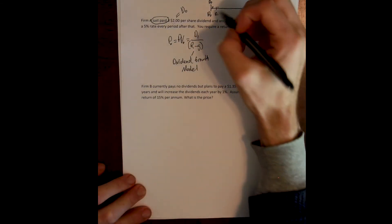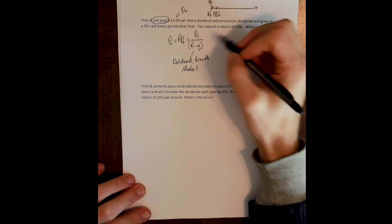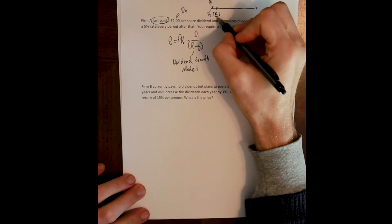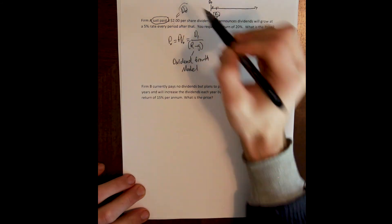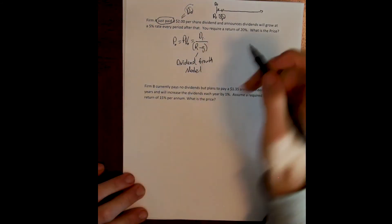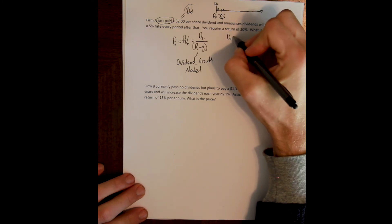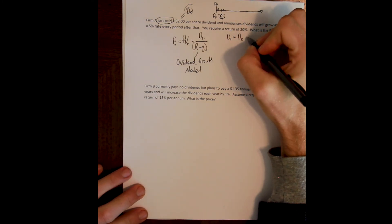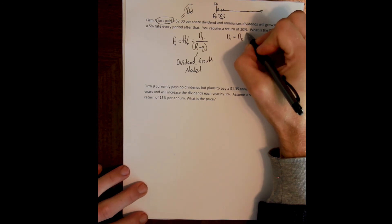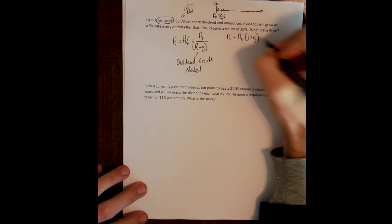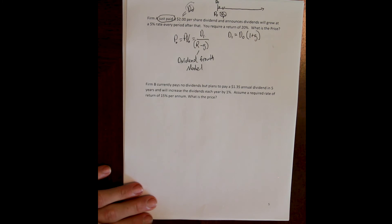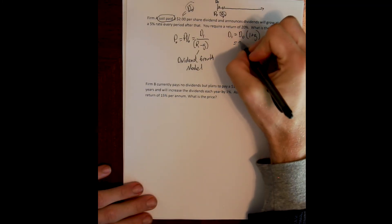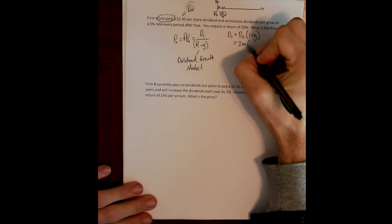To solve the model you need d1. In the problem we are only given d0, and that means we have some calculation to do. We need to calculate d1 by estimating the growth of d0. So d1 is equal to d0 times one plus the growth rate, and d0, the dividend that was just paid, was $2. The growth rate is 5%, and that means that the next dividend that we are promised should be $2.10.